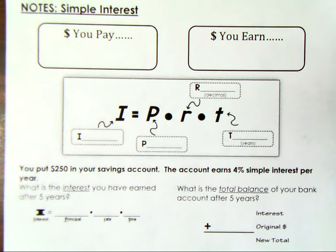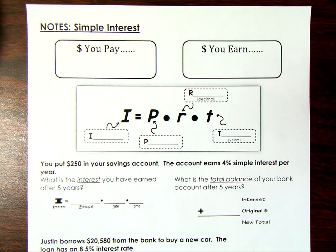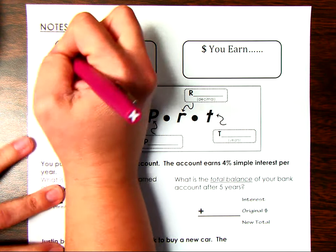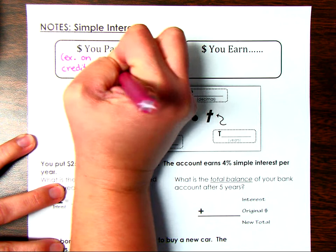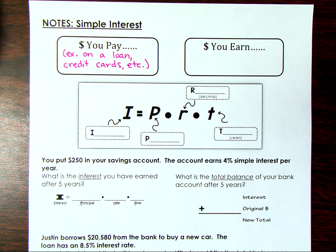Today we are going to talk about simple interest, starting our financial literacy unit. Interest is something you are either going to pay or earn. If you pay it, this could be on a loan or credit card — something extra that you pay. When you borrow money from the bank for a car, you're going to owe them a little bit extra. So let's say you borrow twenty-five thousand dollars.